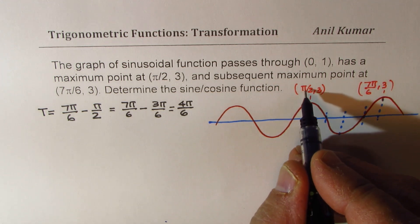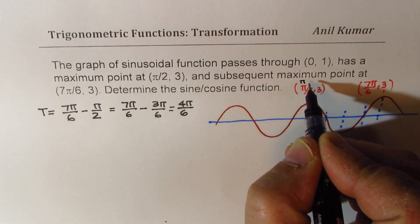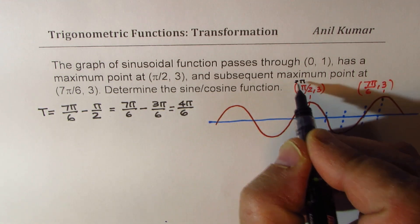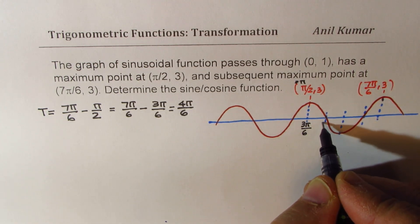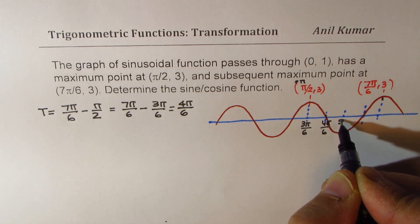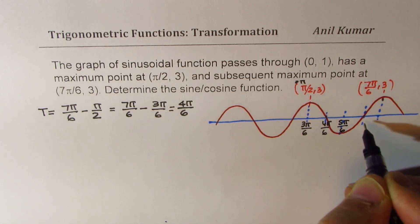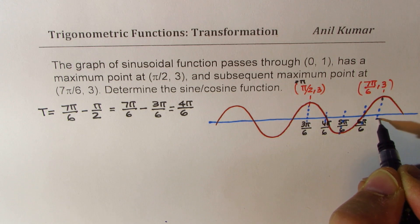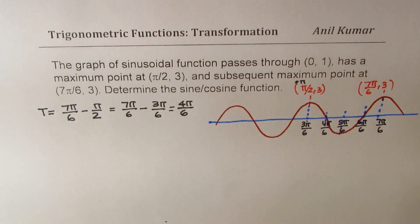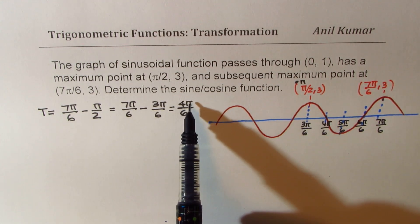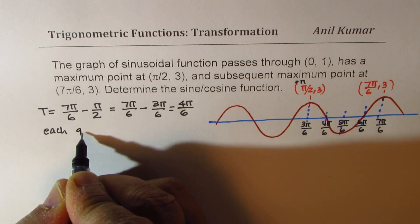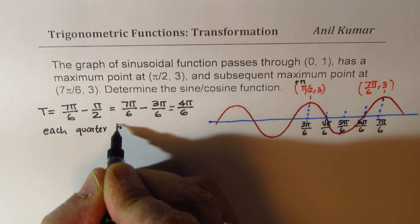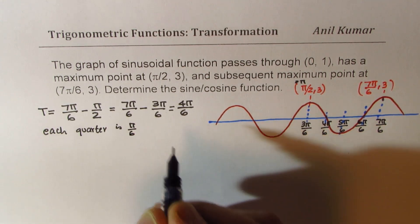So we could write this as 3π/6. So this point here is 3π/6. Now here we have 4π/6, this is 5π/6, this is 6π/6 and then this is 7π/6. So when you are saying time period is 4π/6, then each quarter is a π/6 away. So that means each quarter is π/6 away.